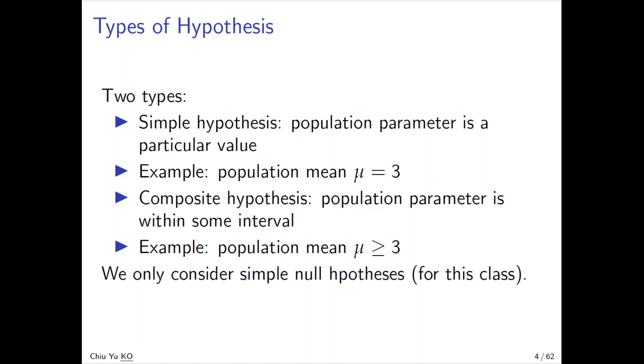Hypotheses can be of two types: one is called a simple hypothesis, the other is called a composite hypothesis. A simple hypothesis says the population parameter is a particular value - for example, population mean mu equals 3. A composite hypothesis, instead of a single value, is a range of values - for example, the population mean is greater than or equal to 3.